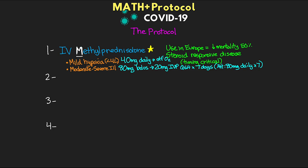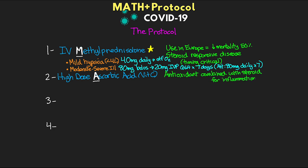The next part of the protocol is high-dose IV ascorbic acid, or vitamin C — this is where the A comes from. Vitamin C is an antioxidant, and high-dose antioxidants are effective when combined synergistically with steroids for treating inflammation. The recommended dose is 3 grams in 100 milliliters IV every six hours, maintaining high levels by giving it on this frequent basis for seven days or until the patient is discharged.